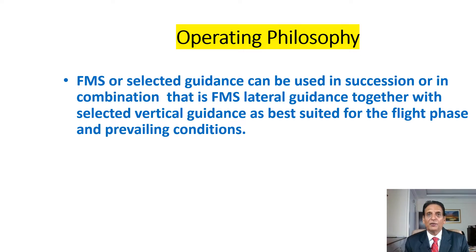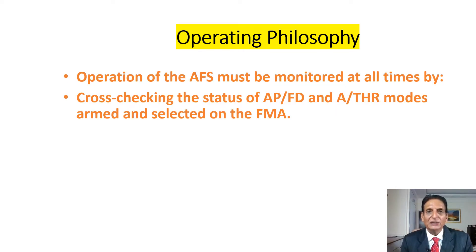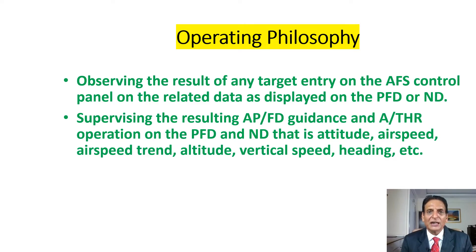Now we will discuss the operating philosophy. The flight management system or selected guidance can be used in succession as best suited for the flight phase and prevailing conditions. Operations of the automatic flight systems must be monitored at all times by cross-checking the status of autopilot/flight director and autothrottle modes, armed and selected, on the flight management annunciator. The result of any target entry on the automatic flight system control panel must be observed in relation to data as displayed on the primary flight display or the navigation display.